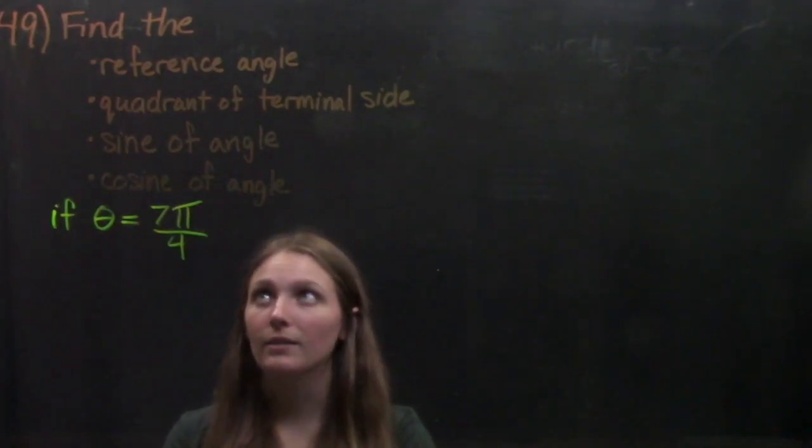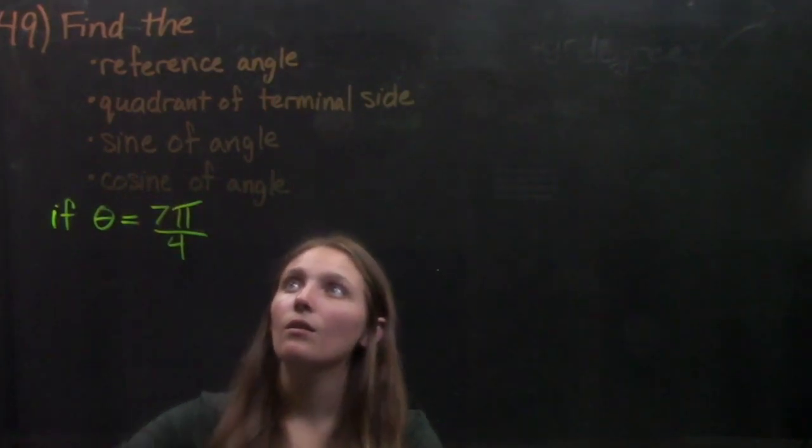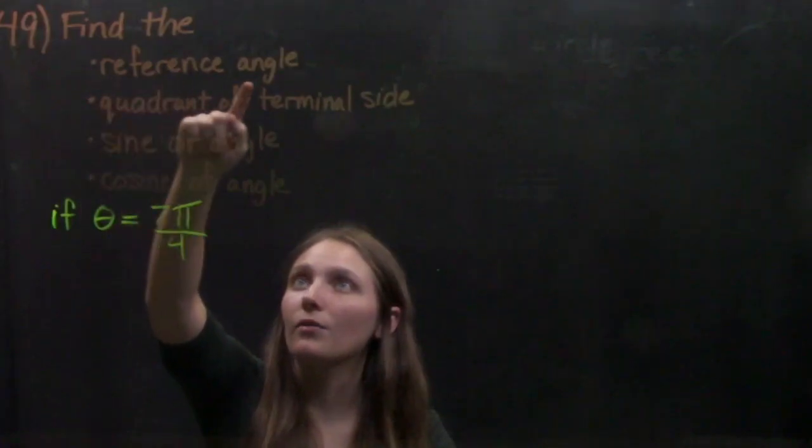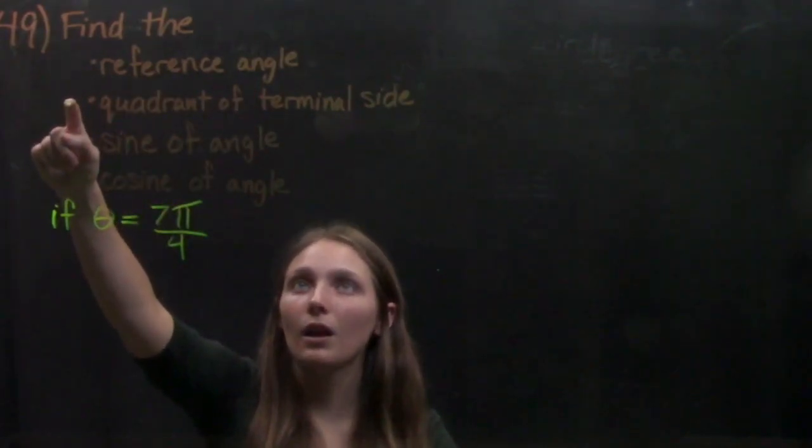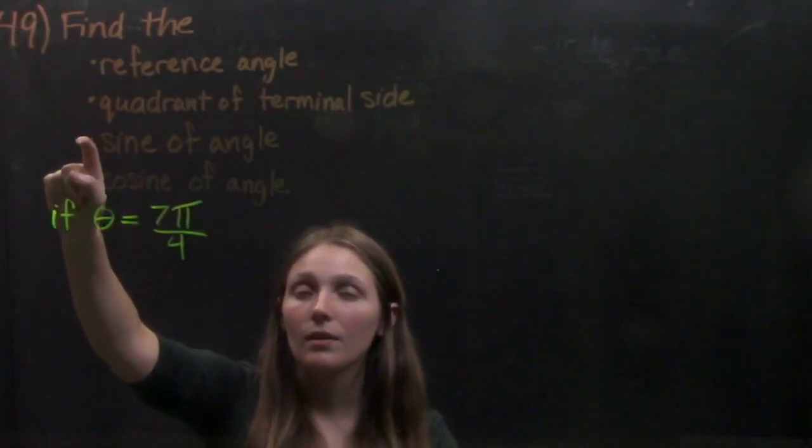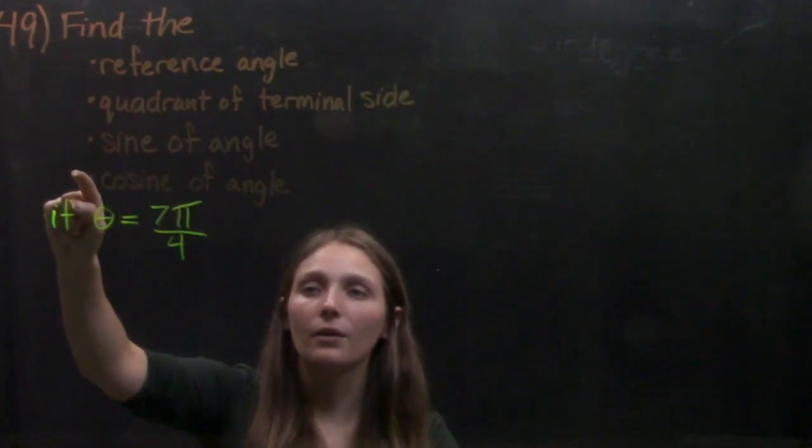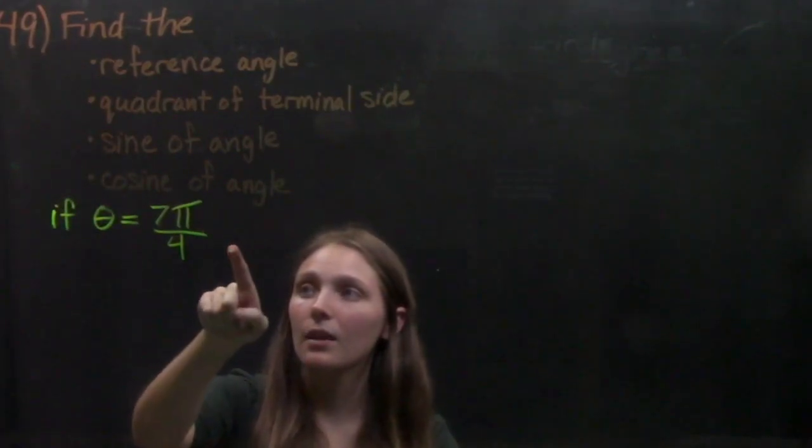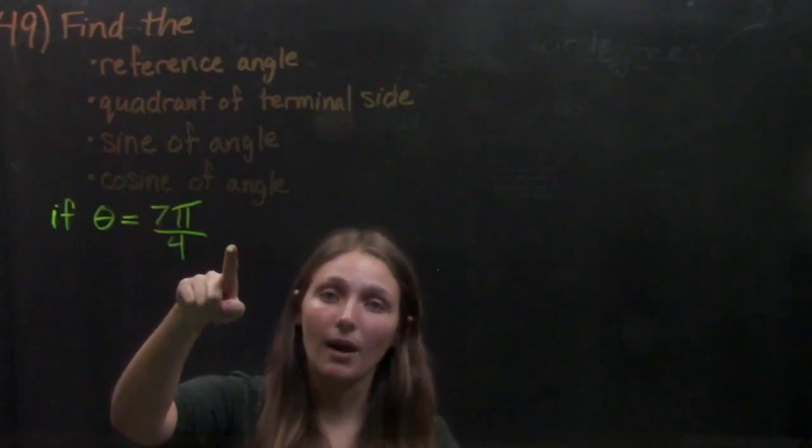So we're working through problem 49. Problem 49 says we're going to find four things: the reference angle, the quadrant of the terminal side of the angle, the sine of the angle, and the cosine of the angle. And the angle that we're given is theta equals 7 pi over 4.